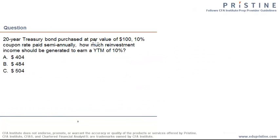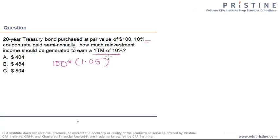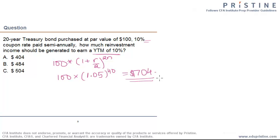Let's take a look at a question. In this question, you have a 20-year Treasury bond purchased at par with a 10% coupon rate paid semiannually. They're asking us how much reinvestment income should be generated to earn a YTM of 10%. To actually earn a YTM of 10%, the future value of $100 twenty years from now is basically 100 times 1.05, which is half of 10%, compounded for 40 periods. This value works out to be $704, which is required in order to generate 10%.